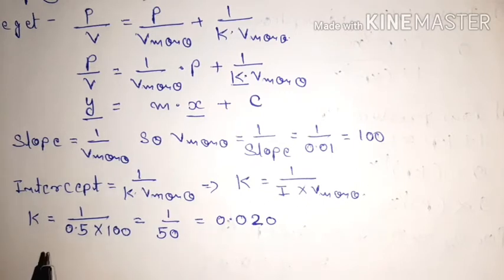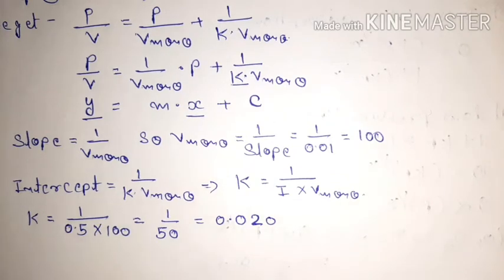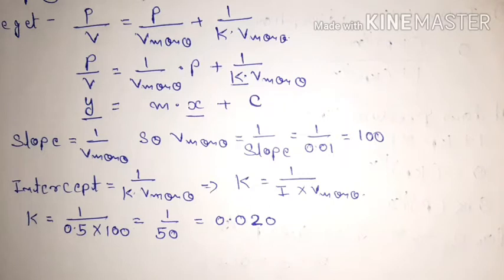So the equilibrium constant K = 0.020 for this GATE 2016 question. A similar type of question was asked in June 2018 GATE exam, based on the same concept, which I've solved in a previous video.